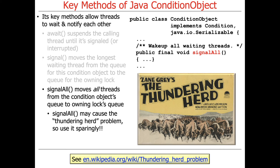This can be problematic and leads to something known colloquially as the thundering herd problem. If you call signalAll, you wake up a large number of threads and they all come crashing into the synchronized method, trying to acquire the monitor lock. Only one of those threads can make progress at a time, so you end up with a huge queue competing for one lock, causing contention. So be careful with signalAll. If you use ConditionObjects correctly, you very rarely have to use signalAll.